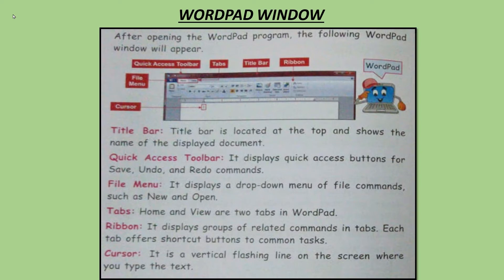This is the WordPad window. After opening the WordPad program, it is very important for you to know the different parts. The title bar is located at the top and shows the name of the displayed document — whenever you save a document with some name, that name appears on the title bar. Quick Access Toolbar displays quick access buttons for save, undo, and redo commands. File menu displays a drop-down menu of file commands such as new and open. Home and View are two tabs in WordPad. Ribbon displays groups of related commands in tabs — each tab offers shortcut buttons to common tasks. The cursor is a vertical flashing line on the screen where you type the text.